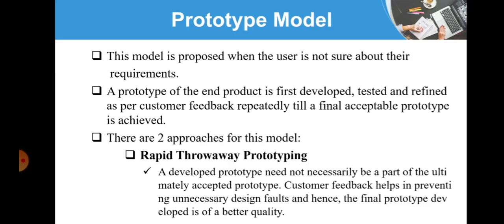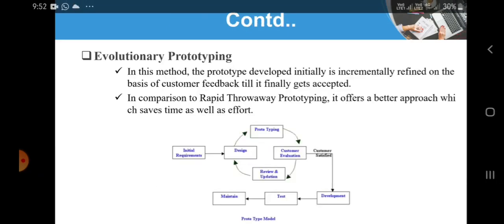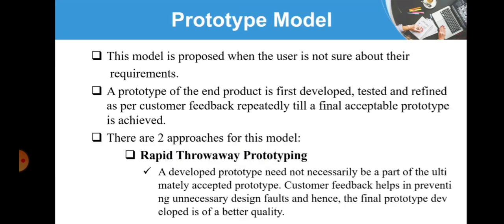Here the prototype model consists of two main approaches: Rapid Throwaway Prototyping and Evolutionary Prototyping. In Rapid Throwaway Prototyping, a prototype is developed from an Outline Specification which is then delivered for experimentation and then modified according to the customer feedback.